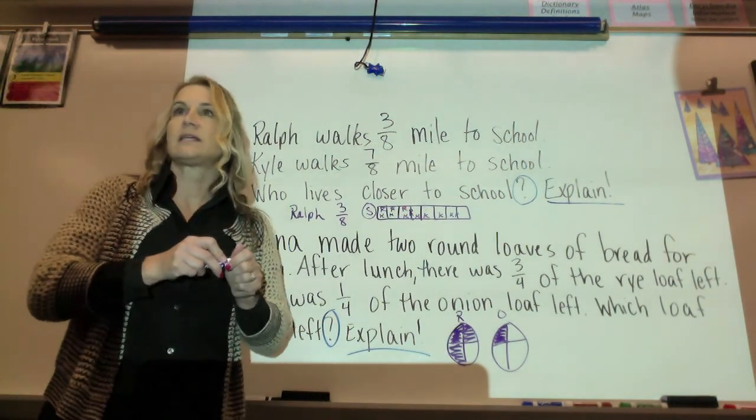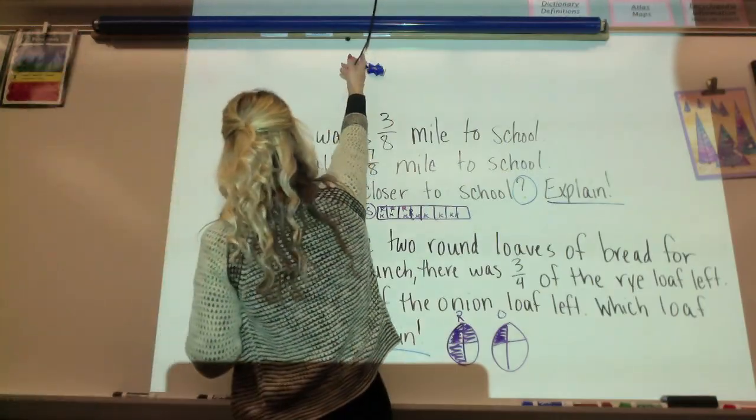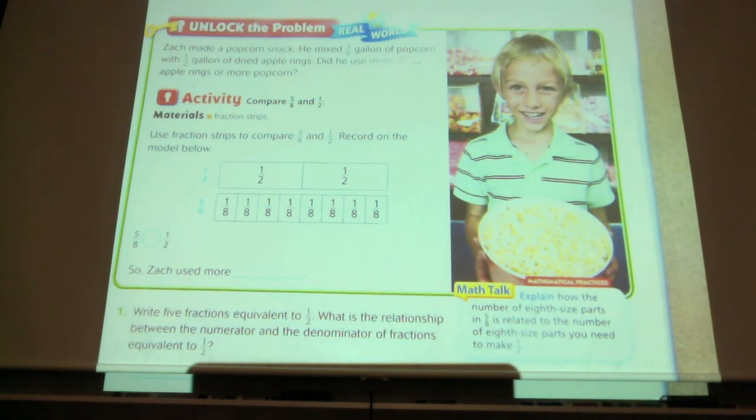We're on six-six today. We're skipping the midpoint, so just go ahead and go to six-six. Zach made a popcorn snack. He mixed five-eighths gallon of popcorn with one-half gallon of dried apple rings. Did he use more dried apple rings or more popcorn?